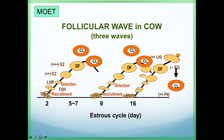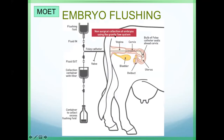We have several methods using CIDR to maintain the corpus luteum, and we apply PGF2-alpha, etc. We have to know the follicular dynamics and know when to stimulate and when to stop. We can monitor the follicular wave by ultrasonography. After ovulation and artificial insemination, hopefully on day six or seven the embryo has already moved to the uterine horn, and we collect the embryos before implantation using a Foley catheter.